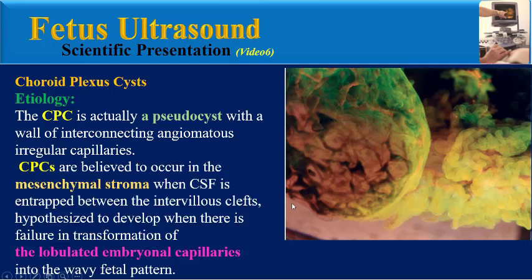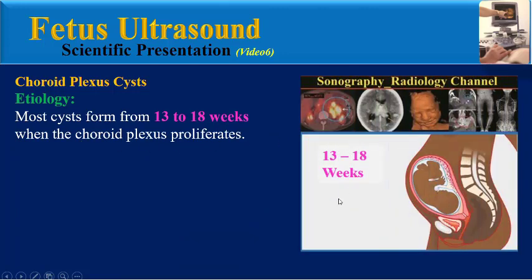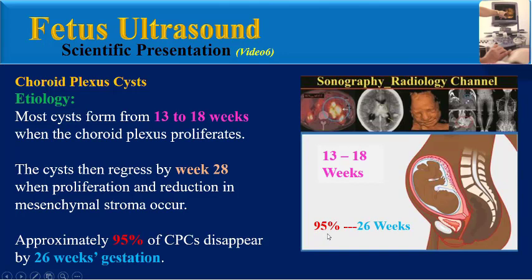Choroid plexus cysts are believed to occur in the mesenchymal stroma when CSF is entrapped between the intervening clefts, hypothesized to develop when there is failure in transformation of the lobulated embryonal capillaries into the wavy fetal pattern. Most cases form from 13 to 18 weeks when the choroid plexus proliferates. The cysts then regress by week 28, and approximately 95% of cysts disappear by 26 weeks of gestation.